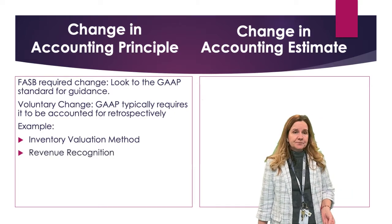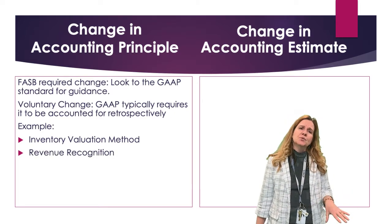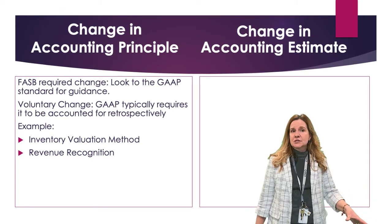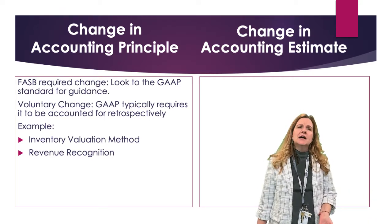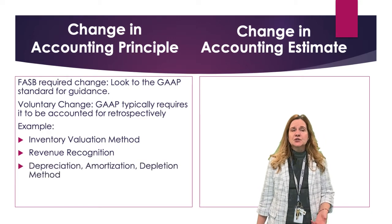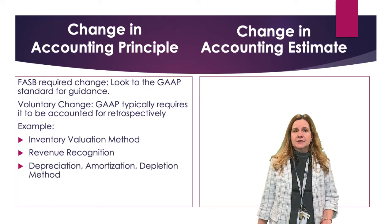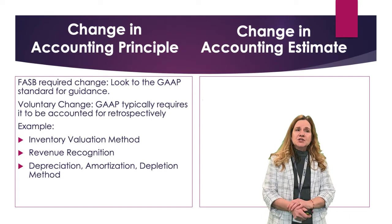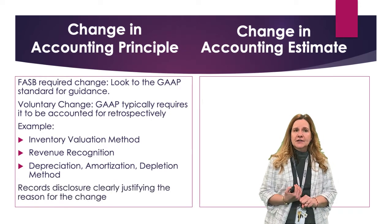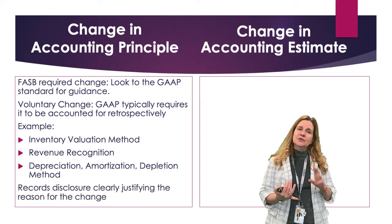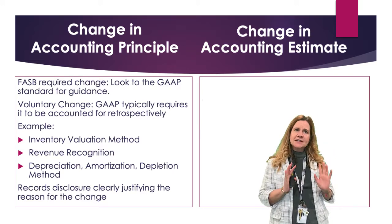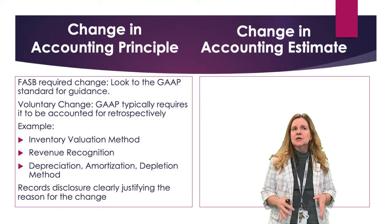Another example is revenue recognition — if I'm changing my revenue recognition principle, maybe in construction using completed contract or percent completion. And then another principle that could be changed is your depreciation, amortization, or depletion methods. When we make these changes, we do have to disclose it in the notes to the financial statements and clearly justify it, giving the reason why we made the change.